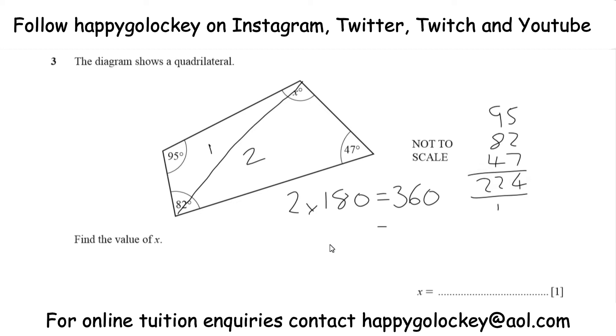That gives us 224 so far, so we take that off 360 to find out what's missing.